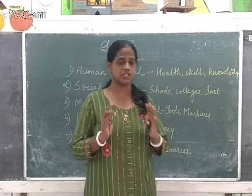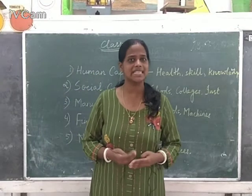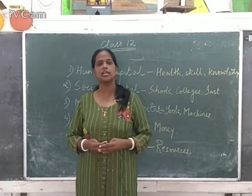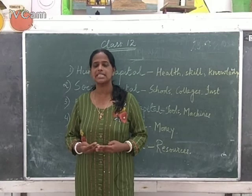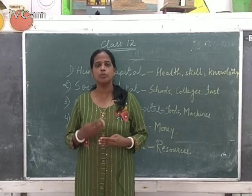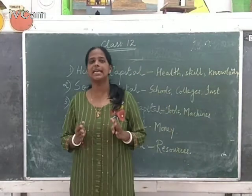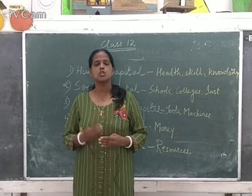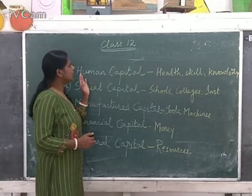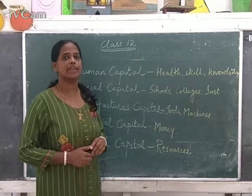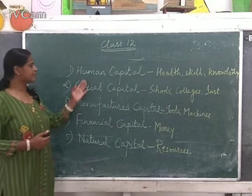This also comes in section C in the broad section for five marks. So we need to understand what is capital and what are the types of capital. Capital, as we all understand, is wealth — an asset on which our life is dependent to make life more comfortable. There are five different types of capital that I have shown you here.